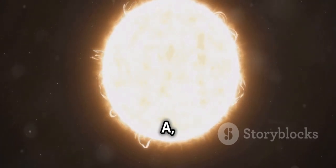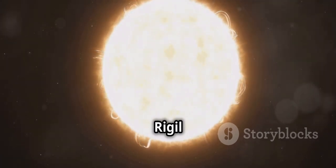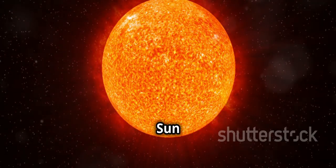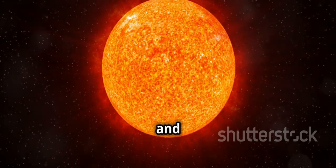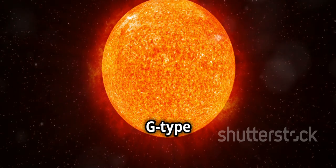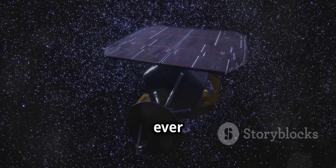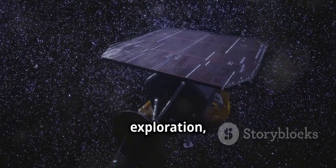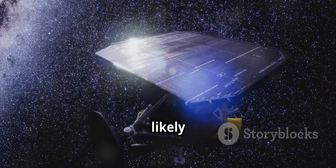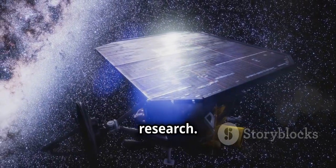Alpha Centauri A, also known as Rigel Cantorus, is very similar to our Sun in terms of size, mass, and temperature, making it a G-type star. If we ever plan interstellar exploration, Alpha Centauri A would likely be one of the primary targets for research.